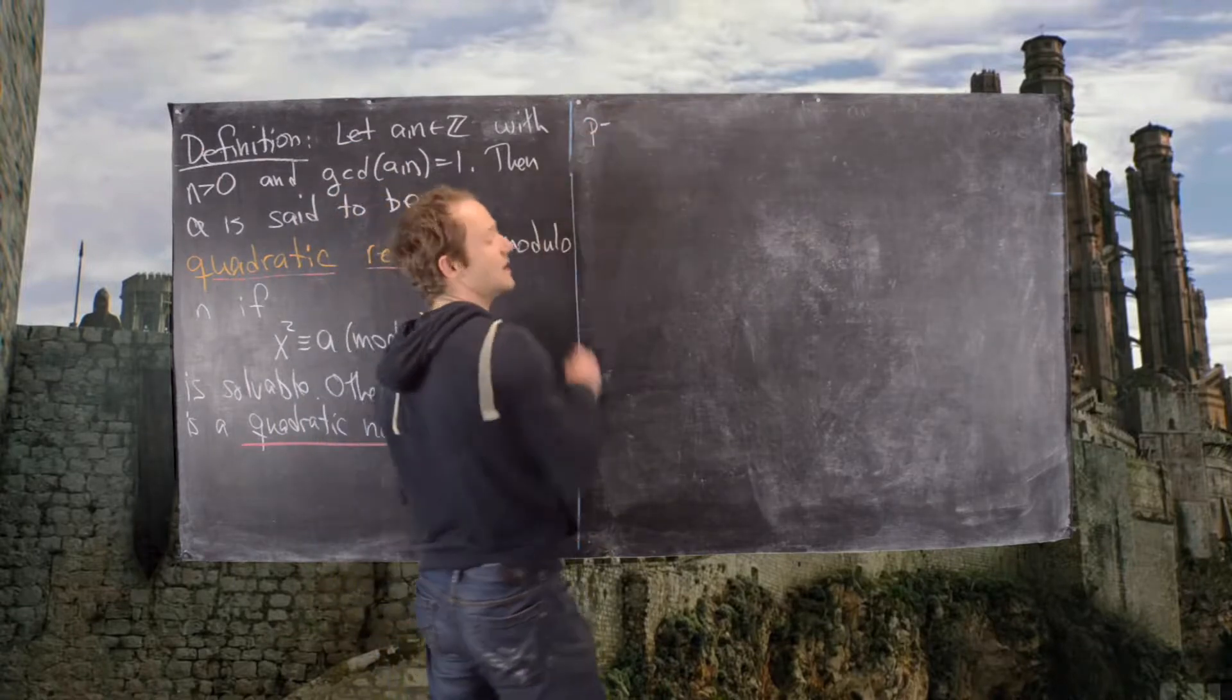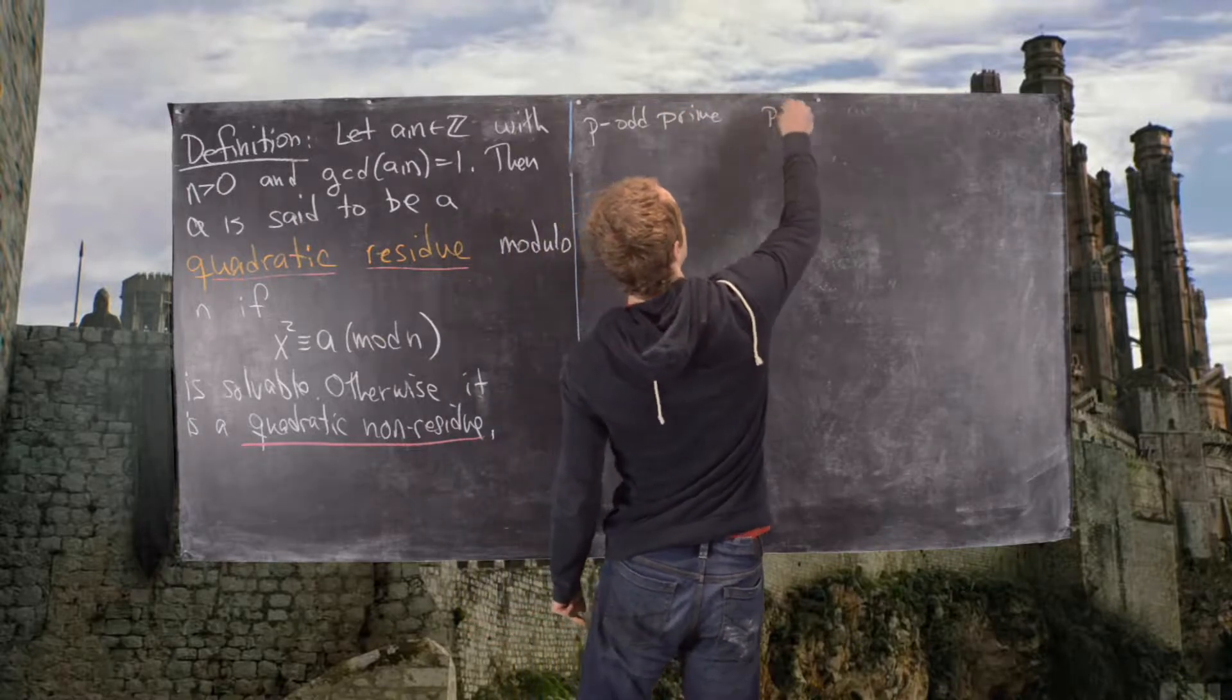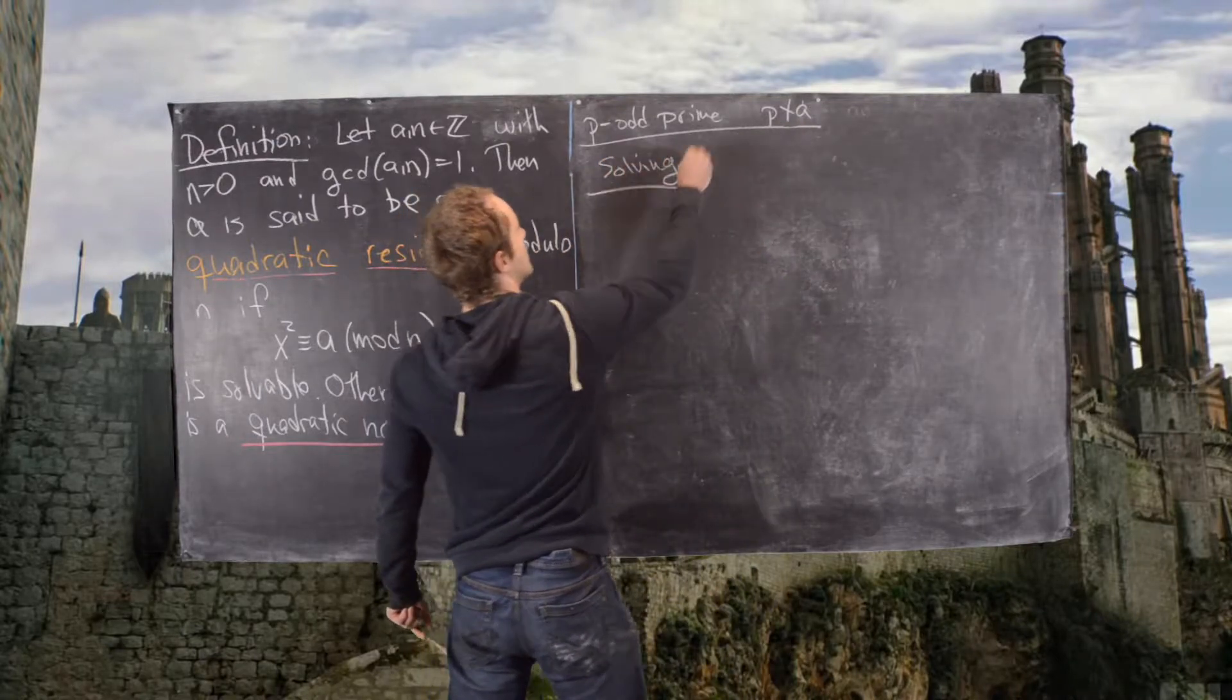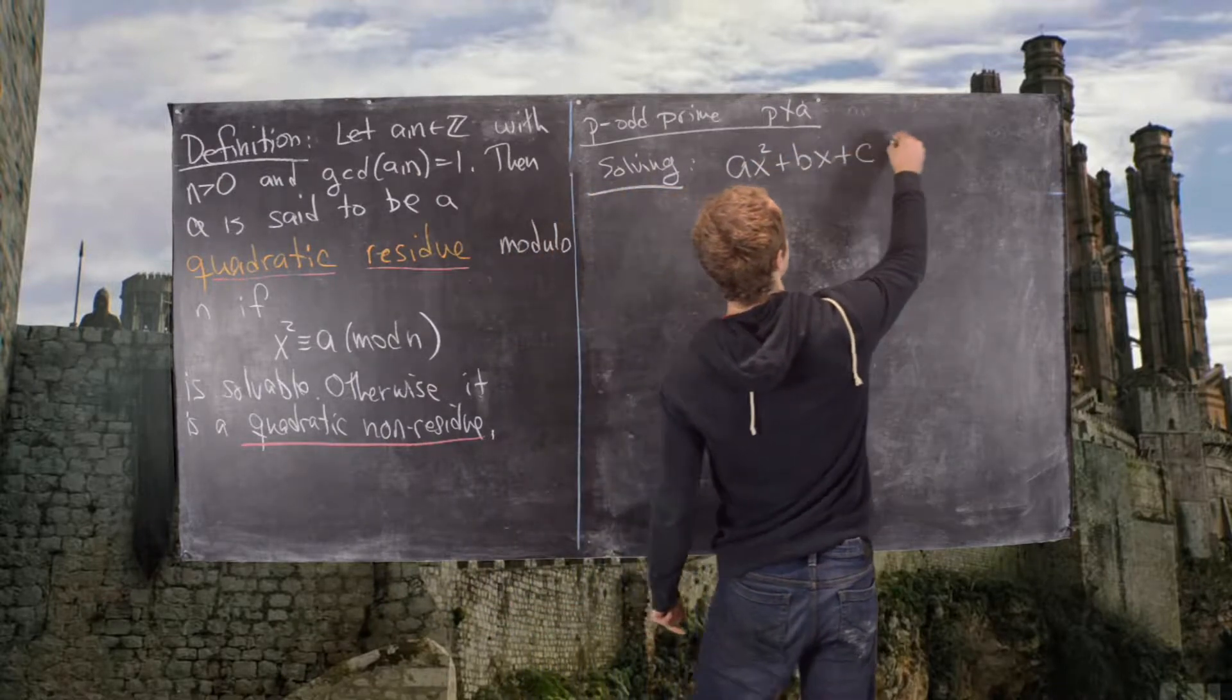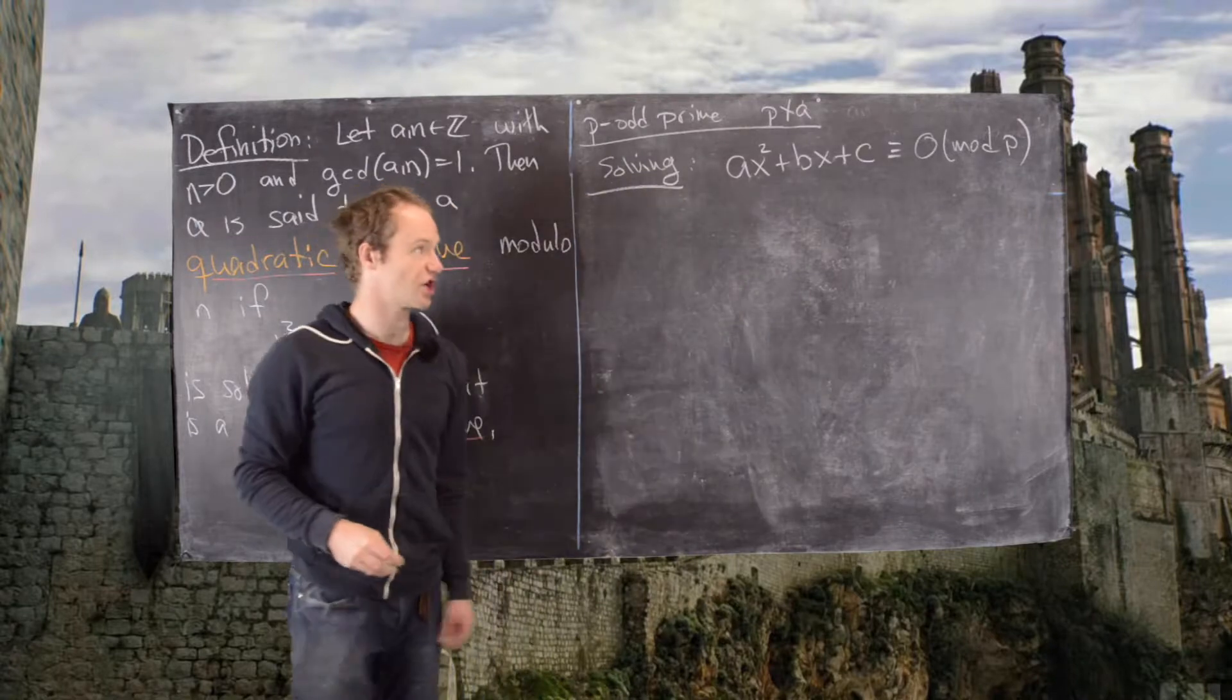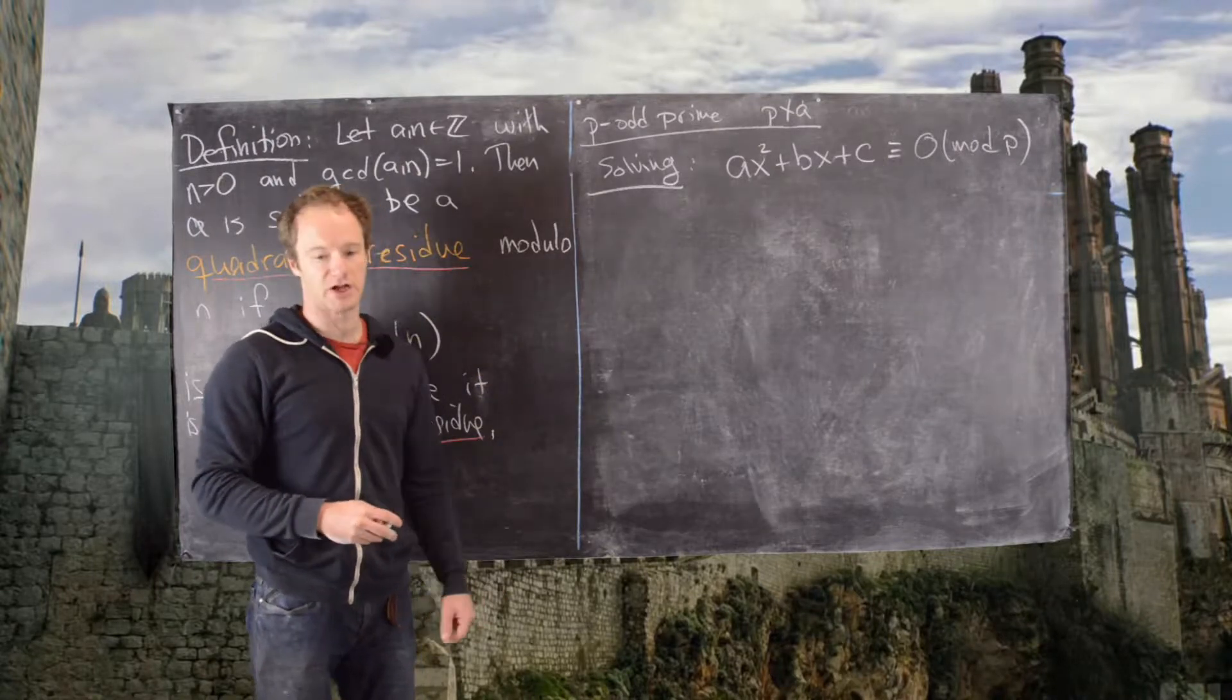So what we want is for this setup, we want p to be an odd prime, and we want p not to divide a number a. And what we want to look at is solving this equation ax squared plus bx plus c congruent to 0 mod p. This is kind of a general quadratic equation, so we'll get something that approximates the quadratic formula modulo p.